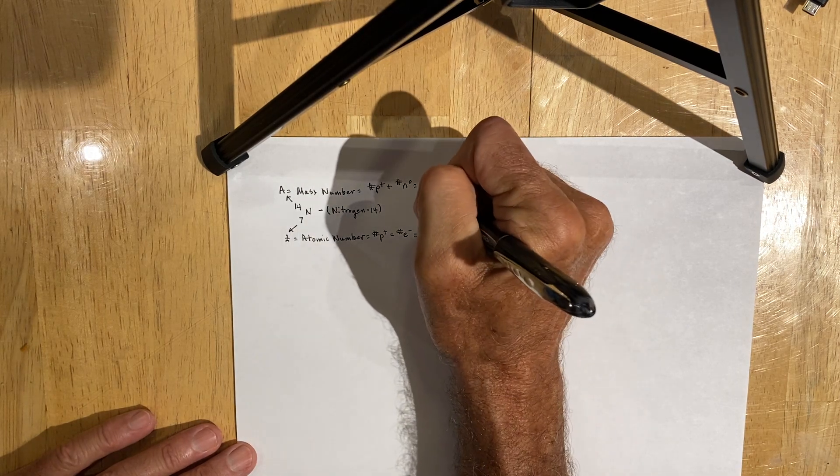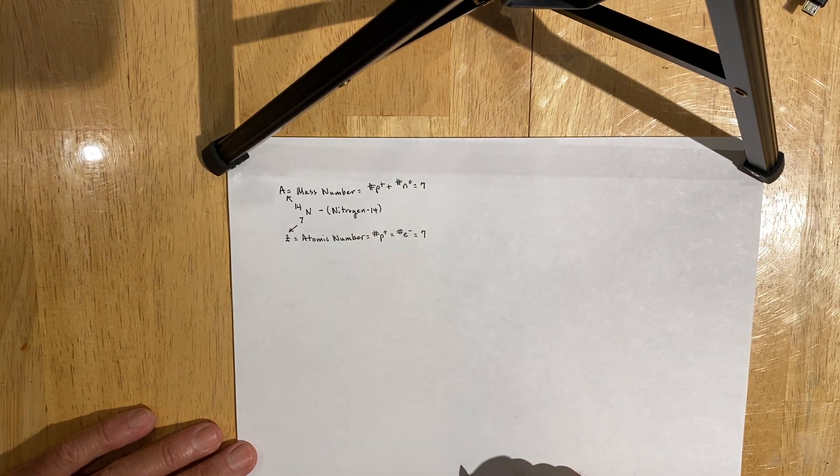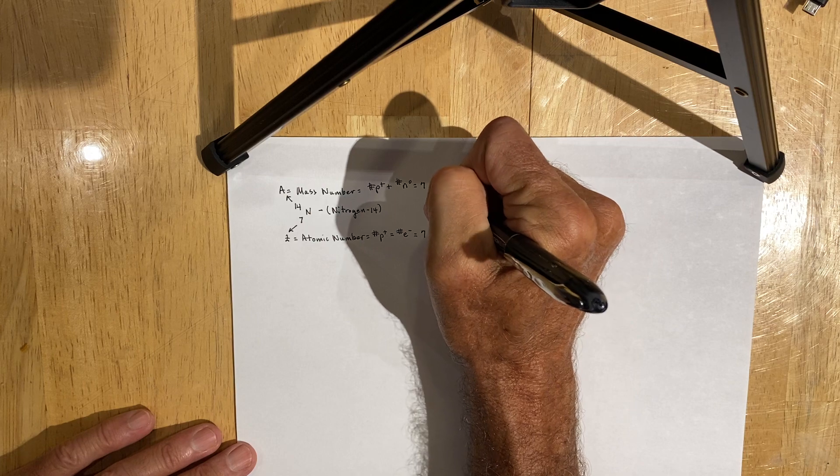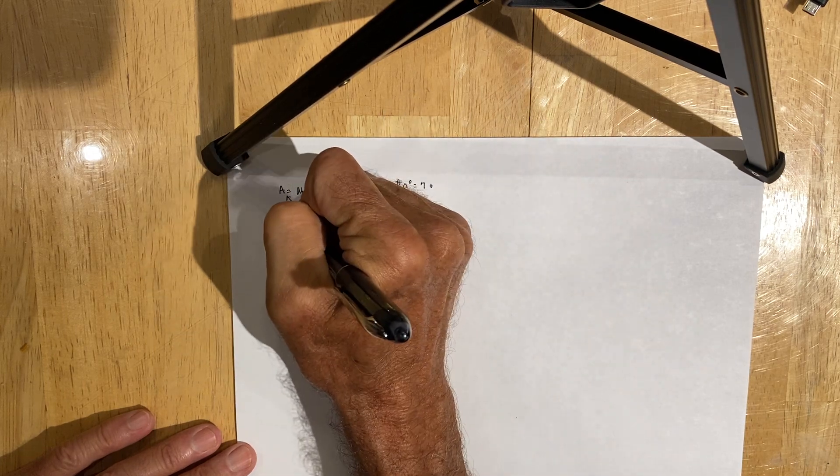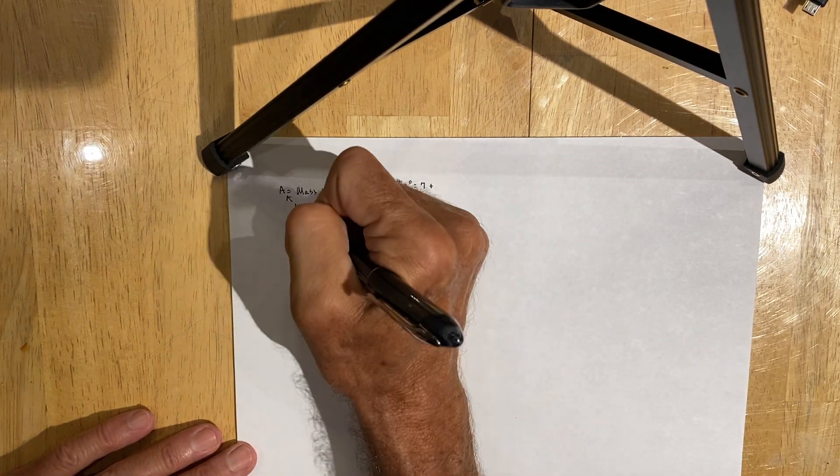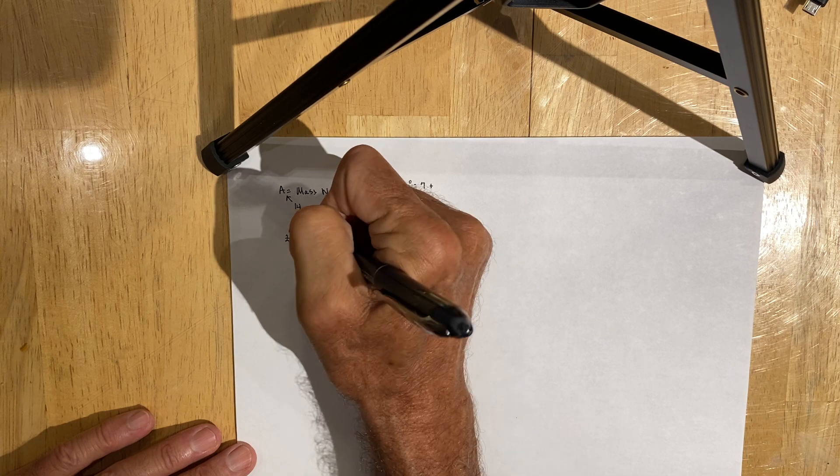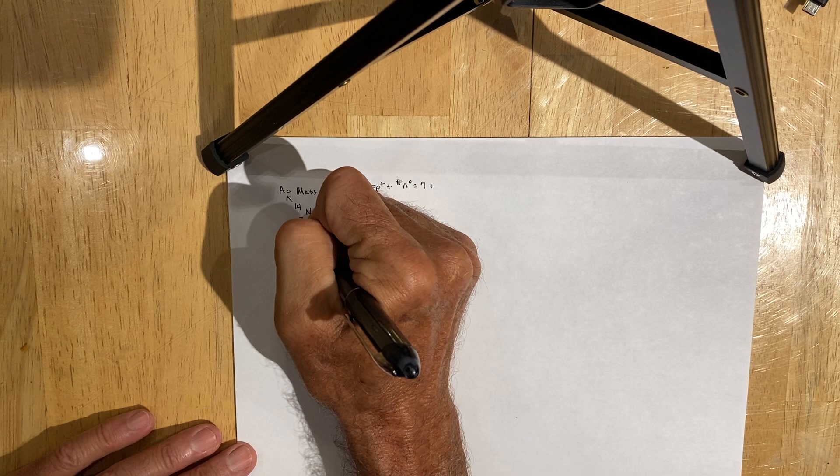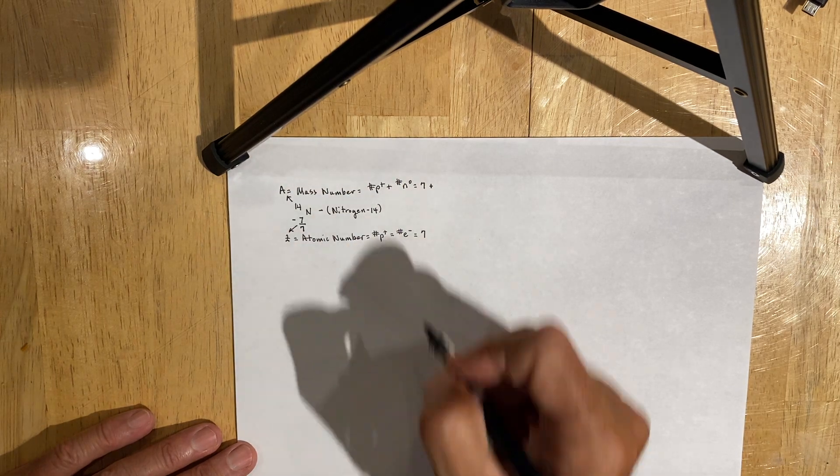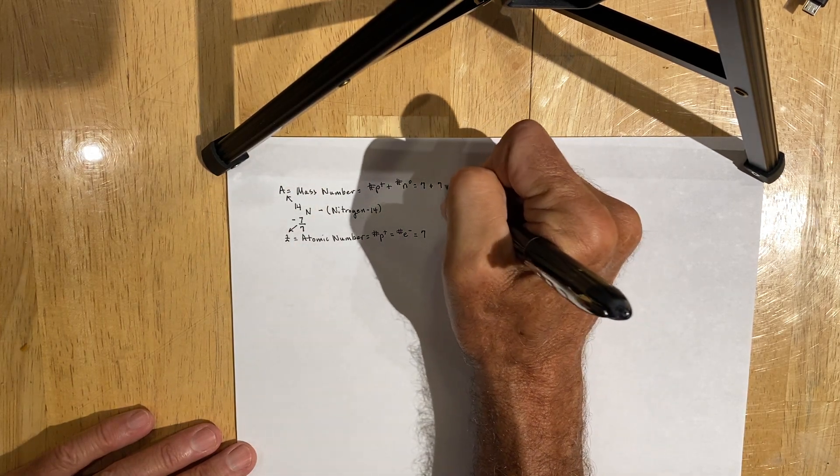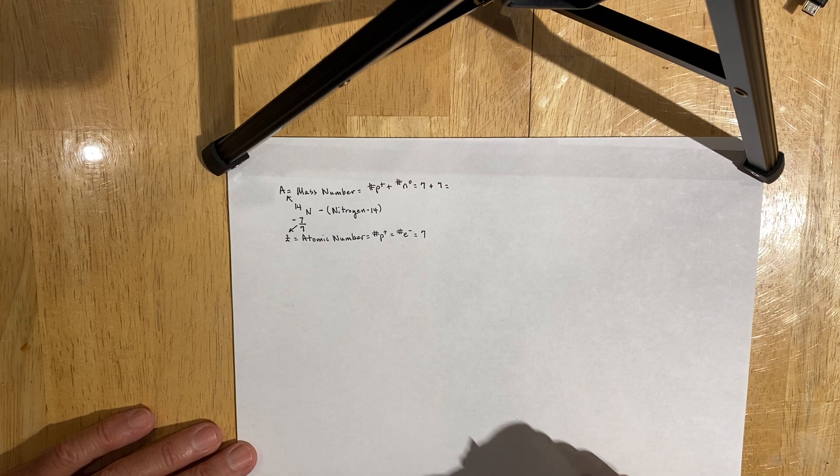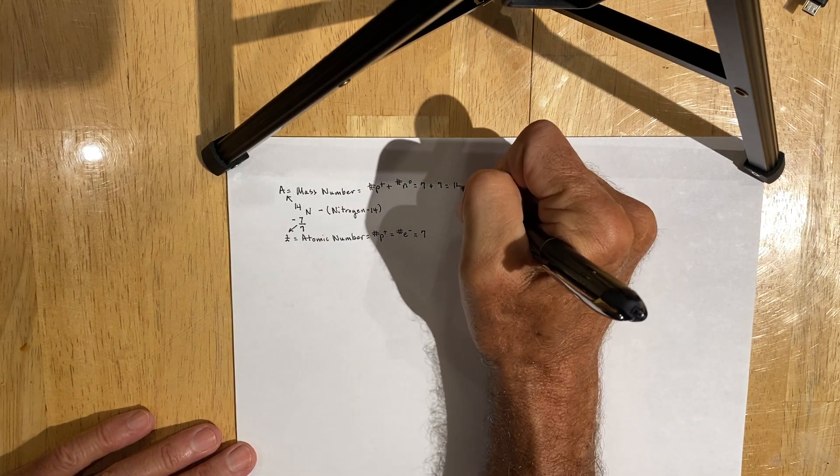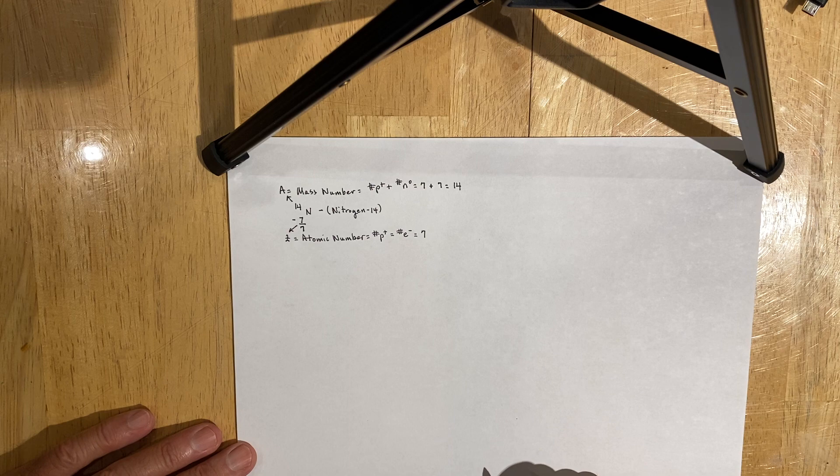So we can say already that this particular isotope has 7 protons, and one shortcut to determine the number of neutrons is to subtract the atomic number from the mass number, and 14 minus 7 is equal to 7. So we can safely say that this particular isotope has 7 neutrons, and thus its mass number is 14.